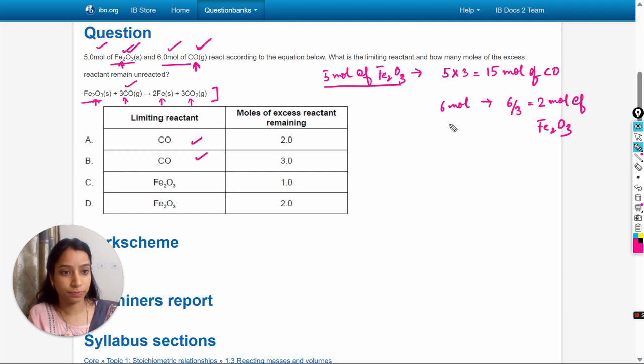So CO is present in A and B options. Then we have to calculate how many moles of the excess reactant remain unreacted. How can we find this? We can see that this is the limiting reactant. This will be used up completely. So 6 moles will react with 2 moles of Fe2O3, but here are present 5 moles.